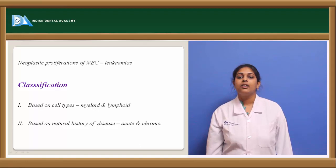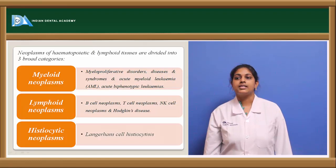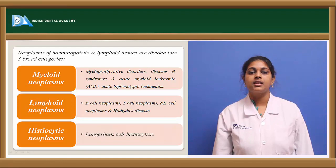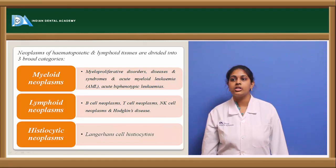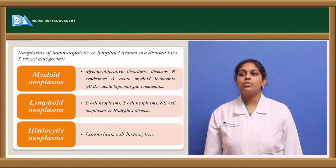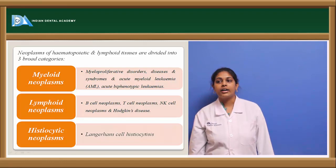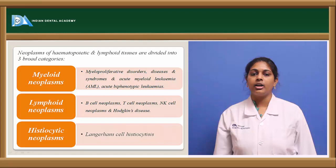The standard classification involves not only leukemias but also certain lymphomas, since the lymphoid cell lineage is involved. Neoplasms of the hematopoietic and lymphoid tissues are broadly categorized into three categories. The first is myeloid neoplasms, which include myeloproliferative disease, certain myelodysplastic syndromes, acute myeloid leukemia, and acute biphenotypic leukemias.